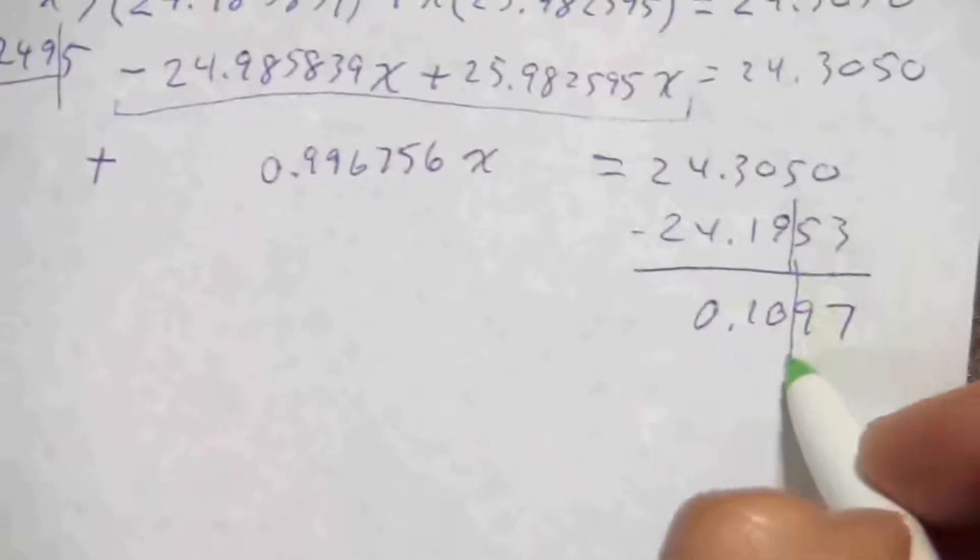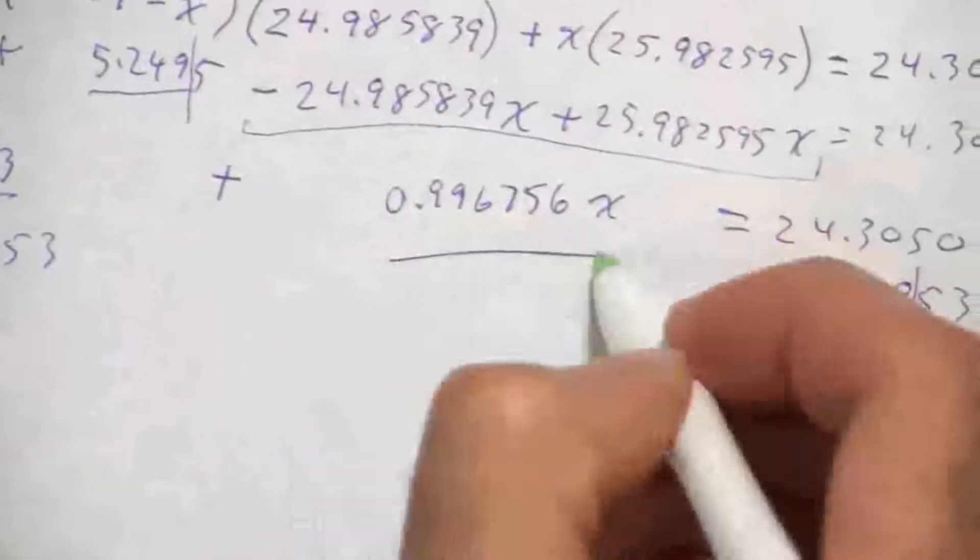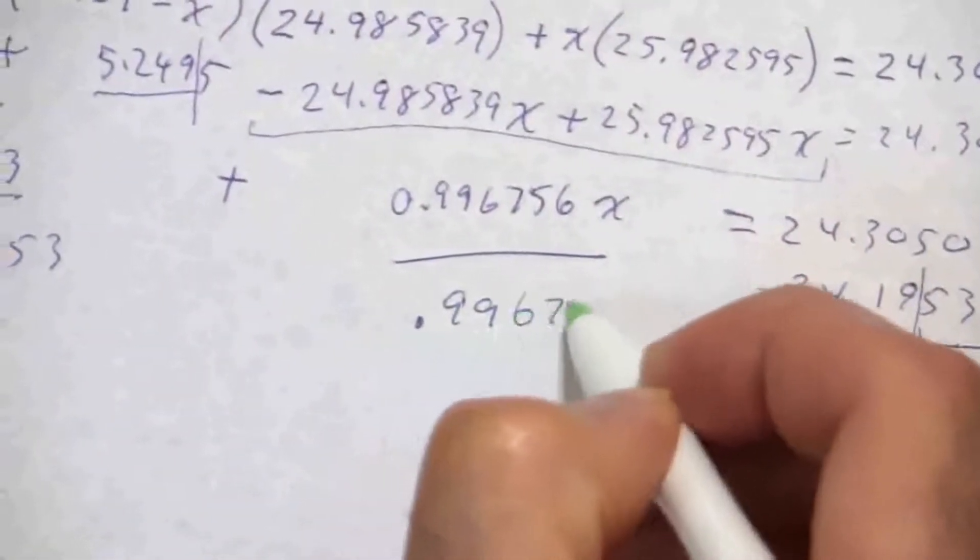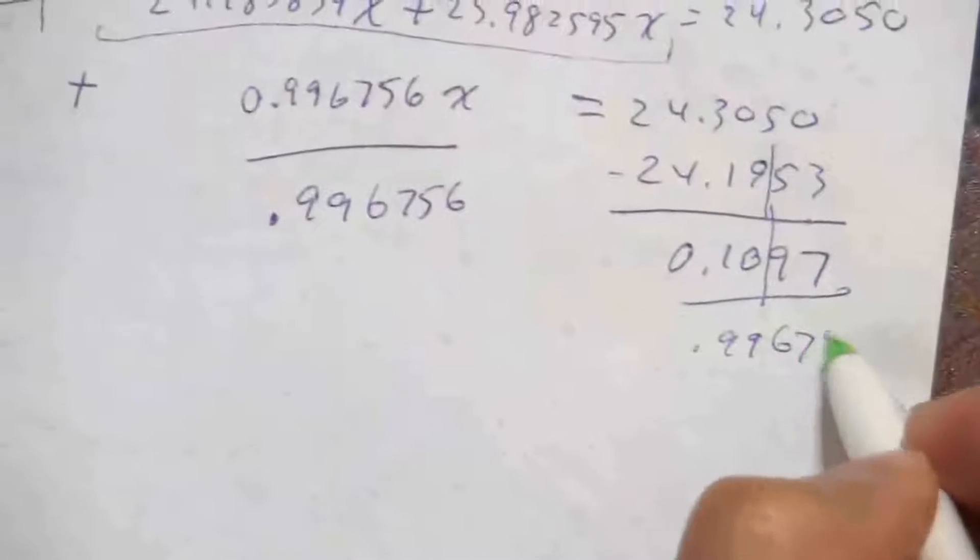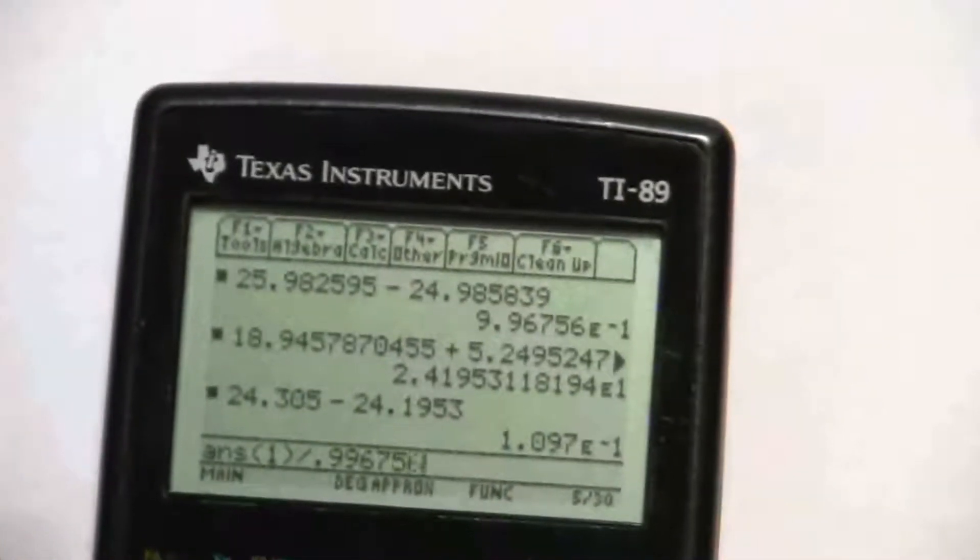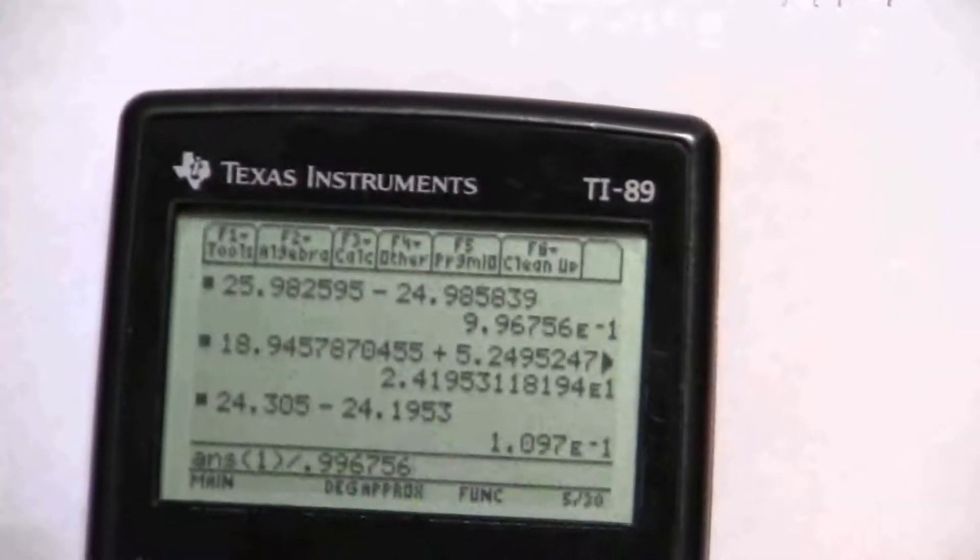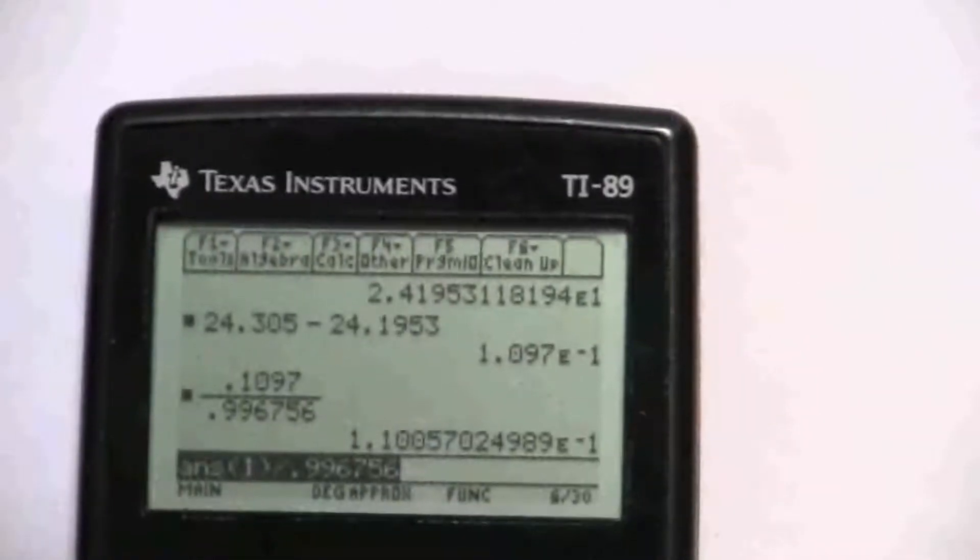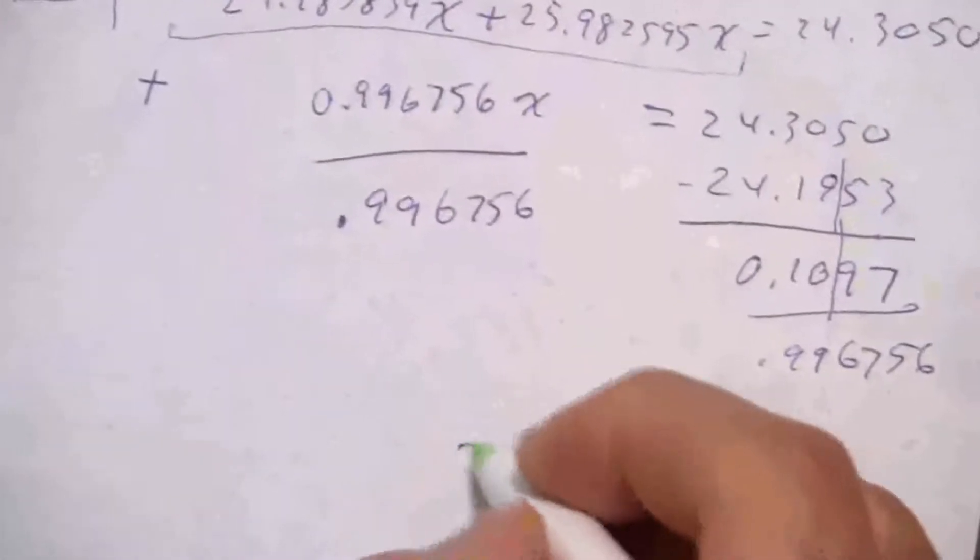And now I'm going to divide both sides by 0.996756. Divide this by 0.996756. And at last, using the answer function makes it handy. So I get times 10 to the minus 1, so 0.110006. So x equals 0.110006.